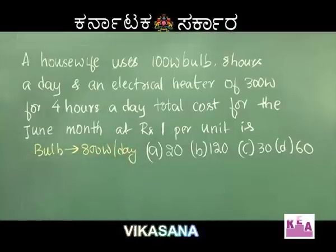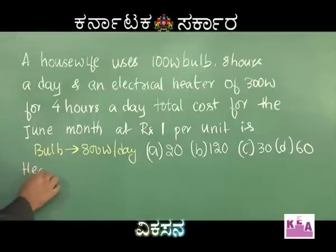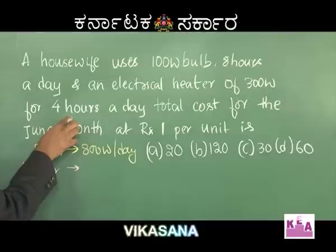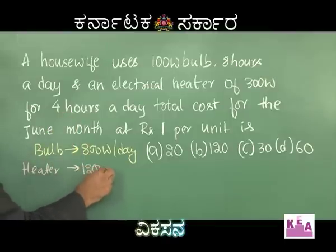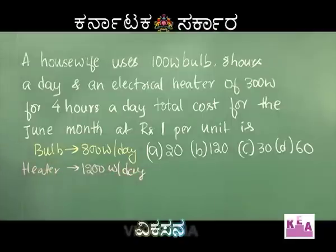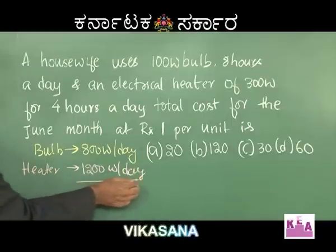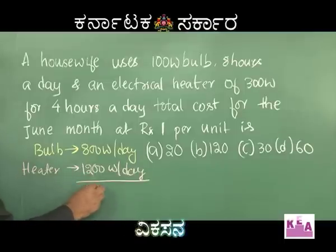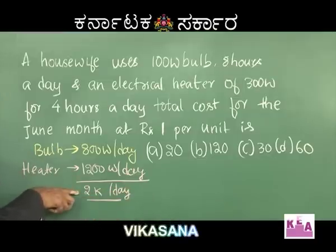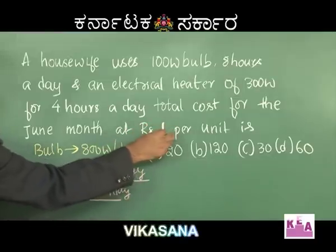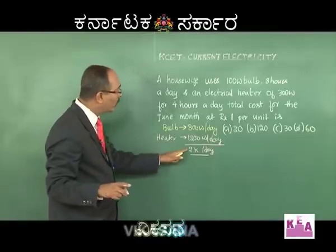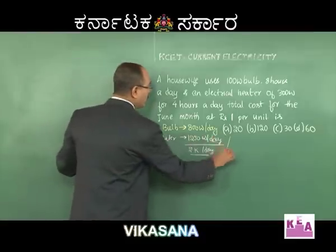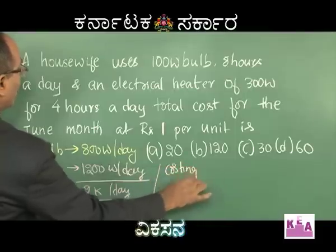For the heater, she is using it for 4 hours a day at 300 watt, so 4 × 300 = 1200 watt-hours per day. Total consumption is 2000 watt-hours, that is 2 kWh per day. The cost is rupees 1 per unit — always remember it is measured in kilowatt-hours — so 2 kWh means rupees 2 per day.